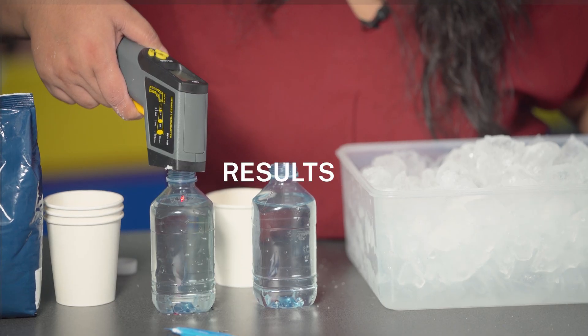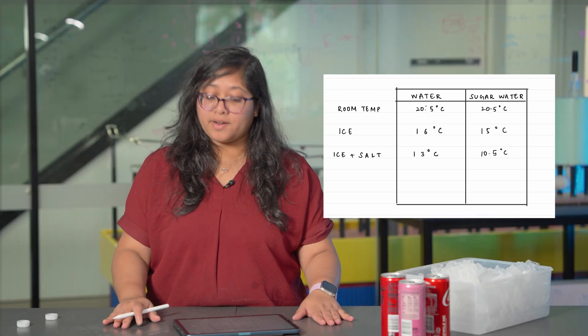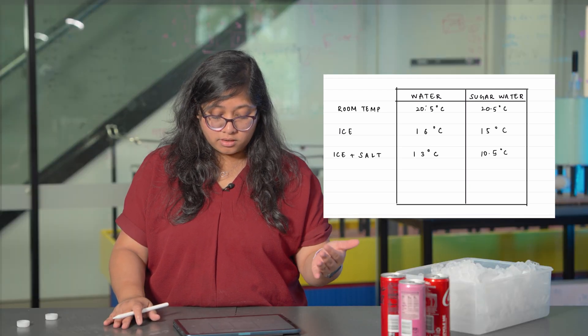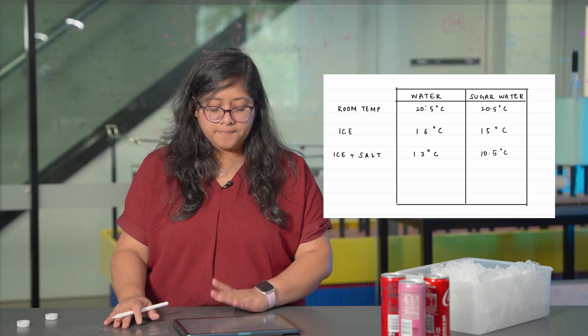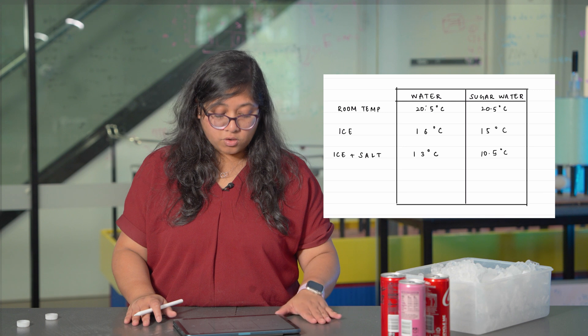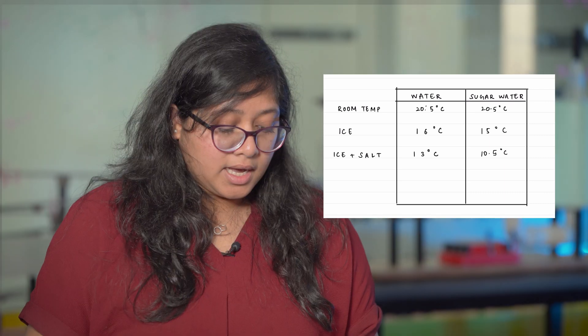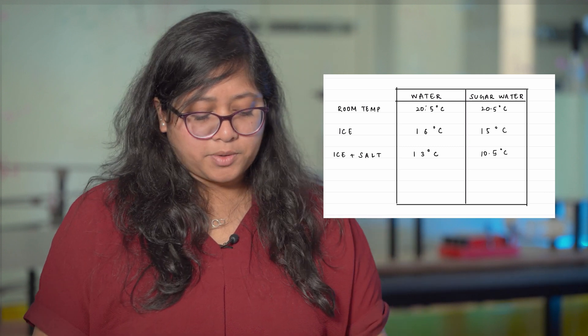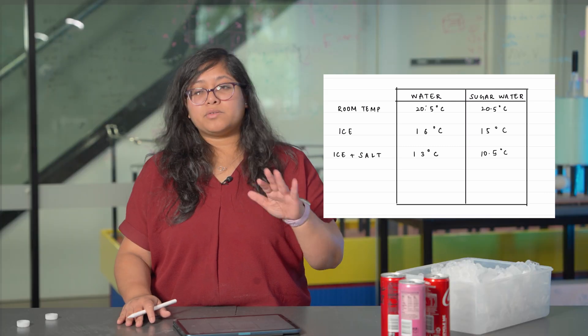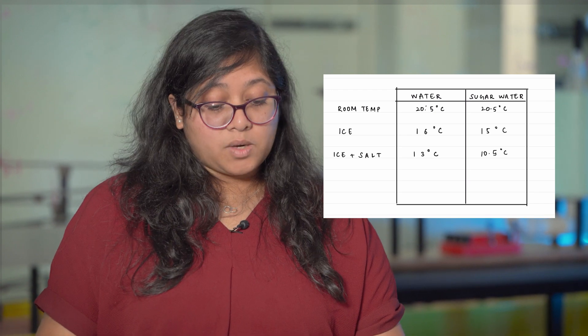Okay, so I've repeated this experiment twice and I have written down, have averaged everything and written down in the table here. So to say the room temperature value for water and sugar water were roughly the same. It was around 20.5 degrees. When we did with the ice, the water was around 16 degrees and the sugar was 15 degrees. So there's about a five degrees fluctuation in the sugar water and a four degree fluctuation in just water. The ice plus salt method, the sugar water was around 10.5 degrees. So the fluctuation is about 10 degrees here. And when we repeated that with water, it was around 13.3, sorry, 13 degrees Celsius, which means the fluctuation was around 7 degrees Celsius. So as you can clearly see, the clear winner here is the ice plus salt. Now let's understand why this happened.